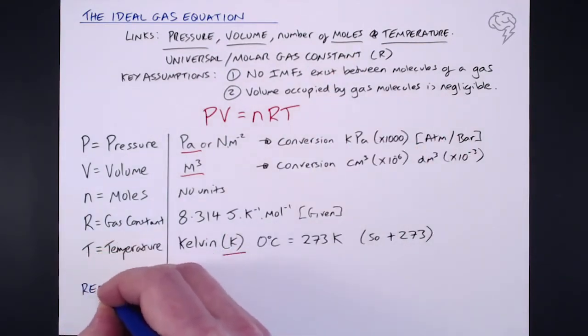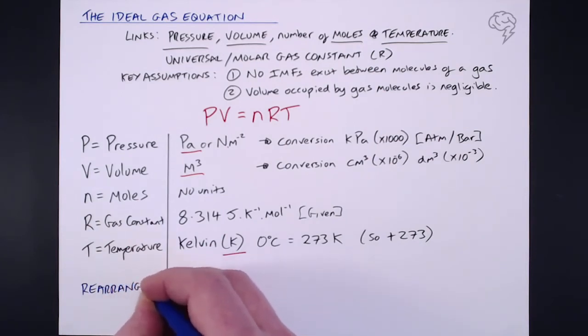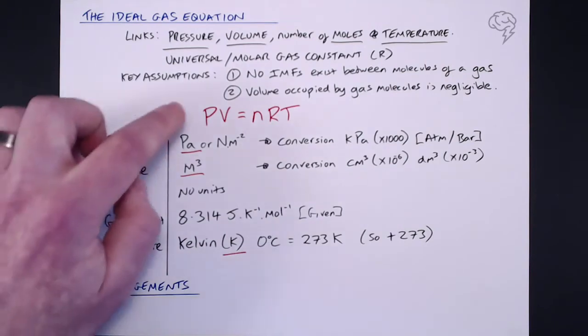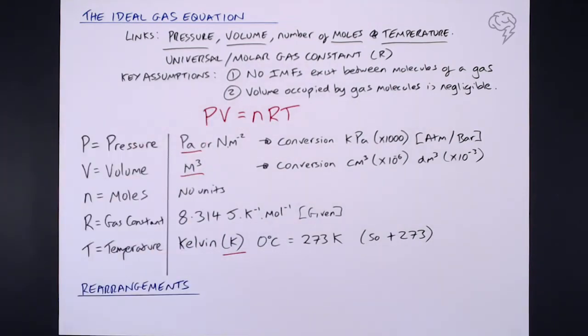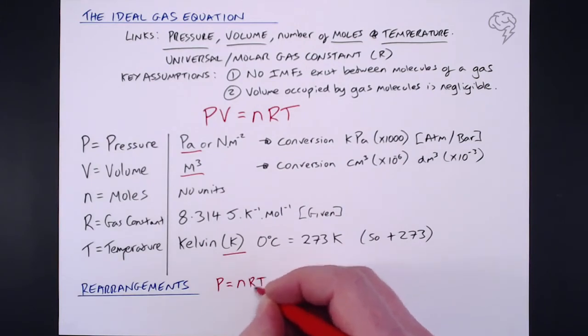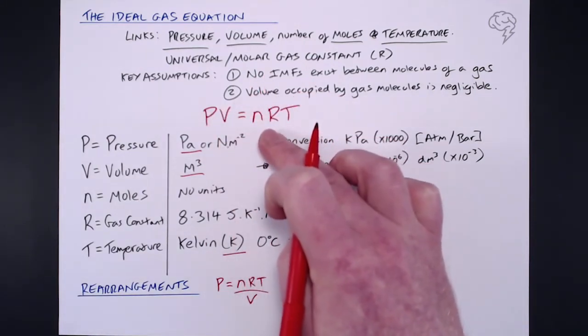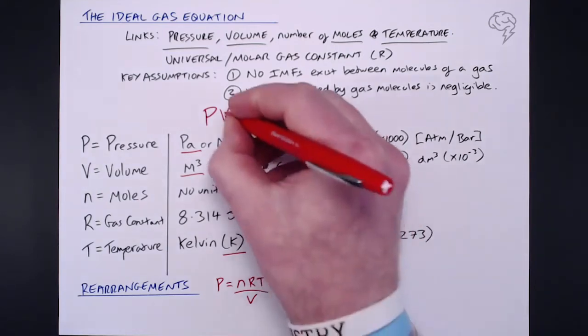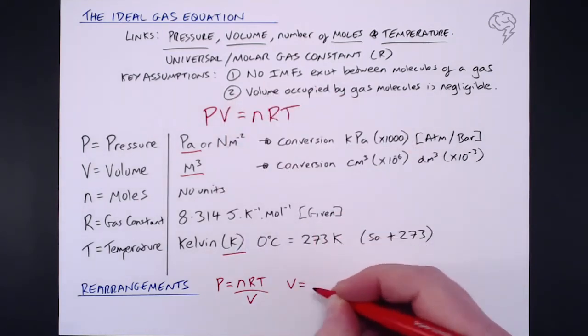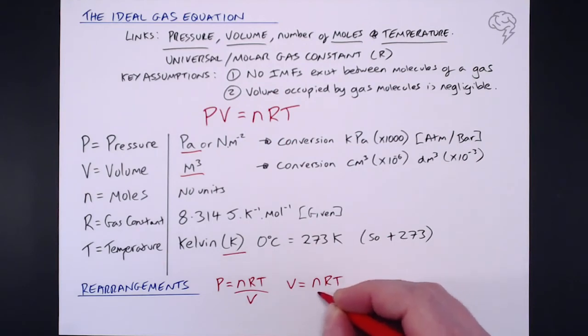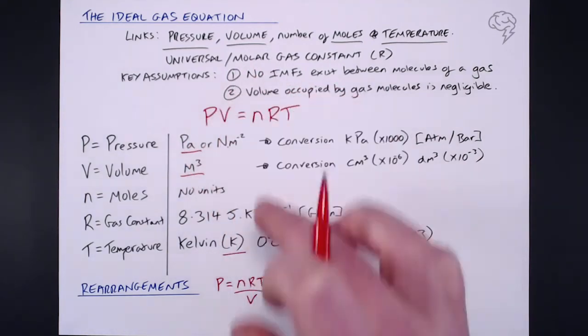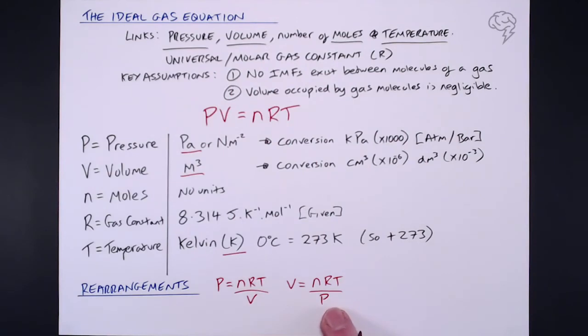Rearrangements. If a question requires you to calculate pressure, pressure equals nRT over V. So I've taken the V and moved it underneath the nRT here. If you're asked to calculate volume, similarly, volume equals nRT over pressure. So if you're asked to calculate one of those two things, those are your rearrangements there.